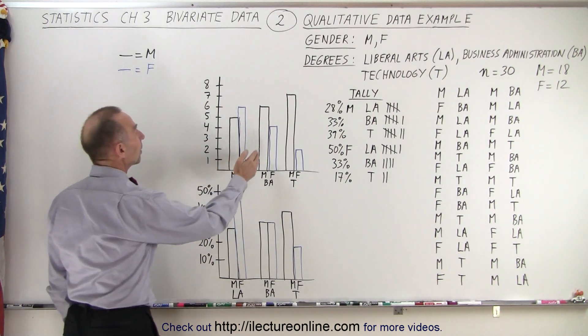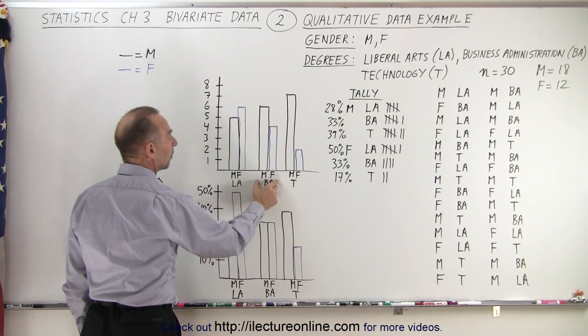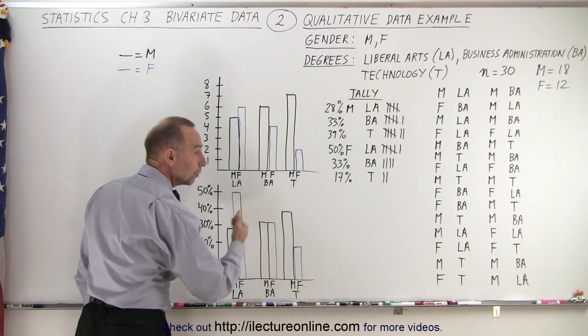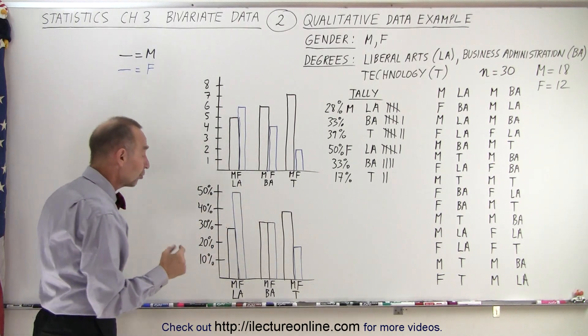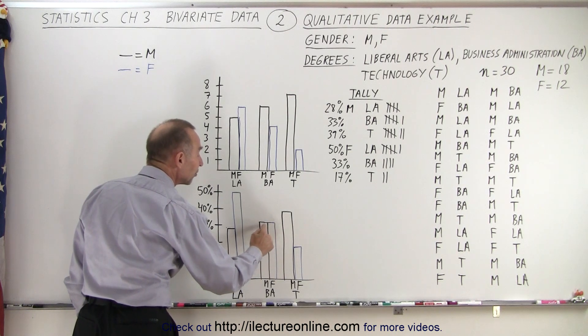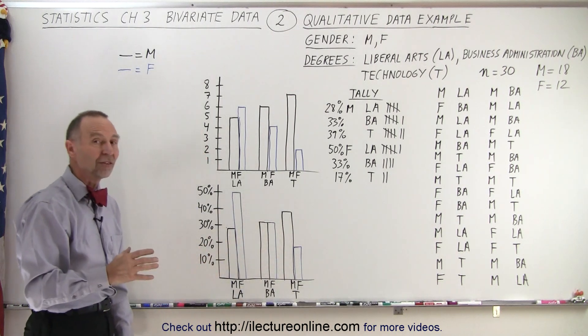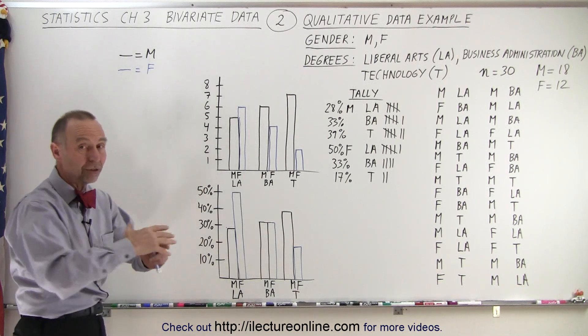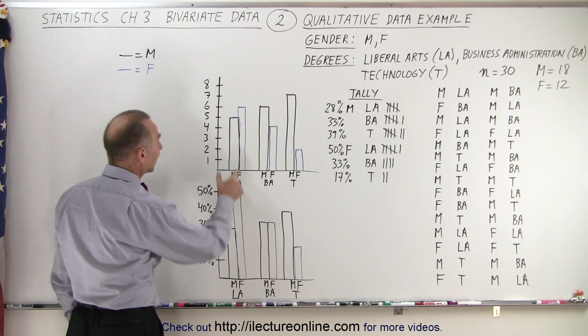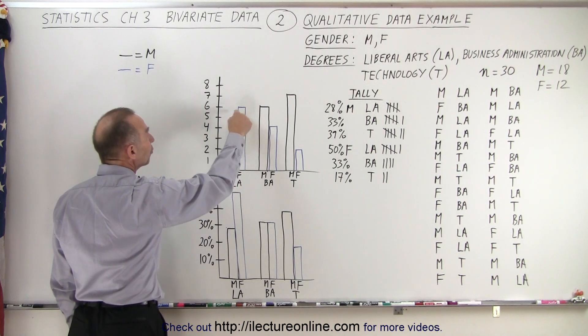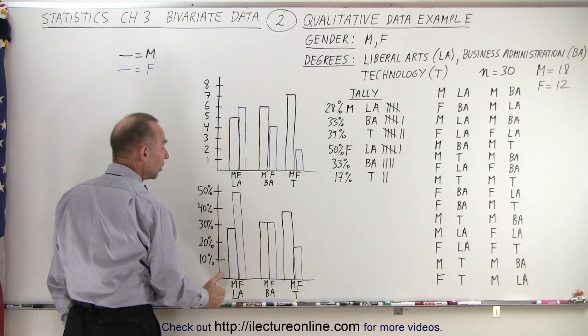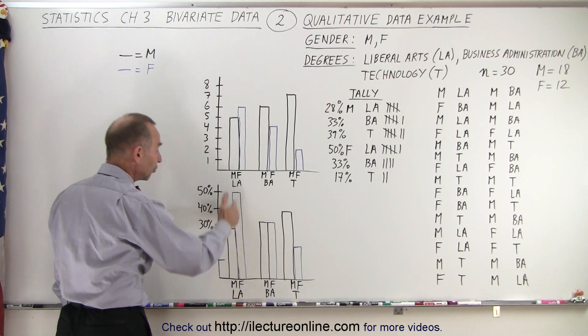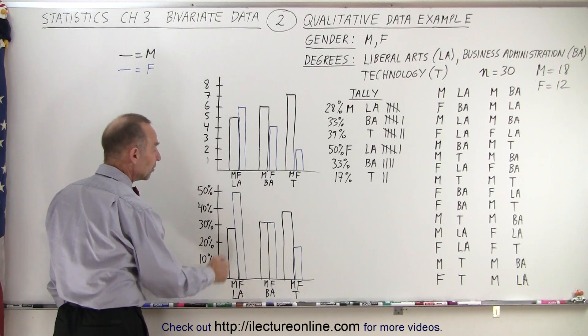Here it would appear that many more male students get BA degrees, Business Administration degrees, compared to females. But if we do it as a percentage of the total number of students, the same number of male and female students are getting Business Administration degrees as a percentage of the total population, or in this case as a percentage of the sample. Now notice that it seemed like almost the same number of students, male and female, are getting Liberal Arts degrees, but as a percentage of the total number of male and female students, far more female students are getting Liberal Arts degrees than male students.